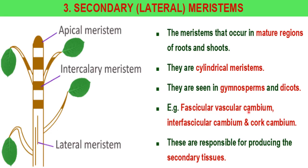Fascicular vascular cambium, interfascicular cambium, and cork cambium are all secondary meristem. They are responsible for producing the secondary tissues. This meristem is called secondary meristem because it does not appear in the early life cycle of the plant — it appears later. It helps in increasing the girth of the plant and in the secondary growth of the plant.